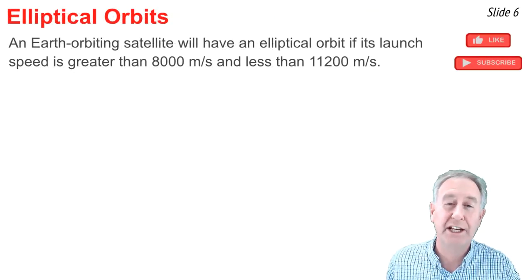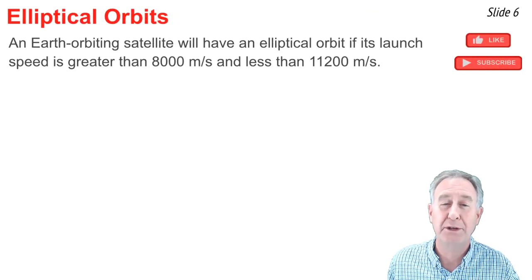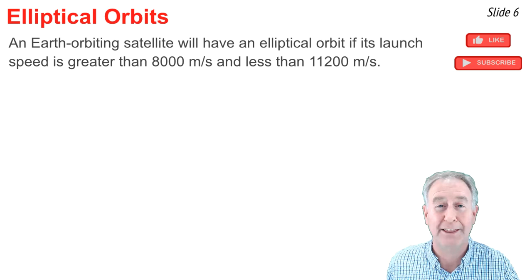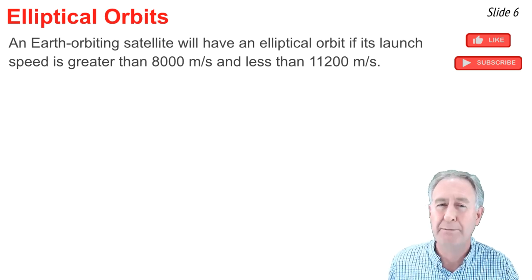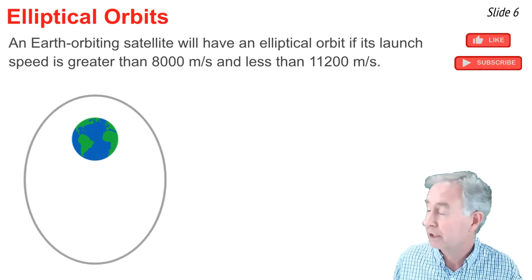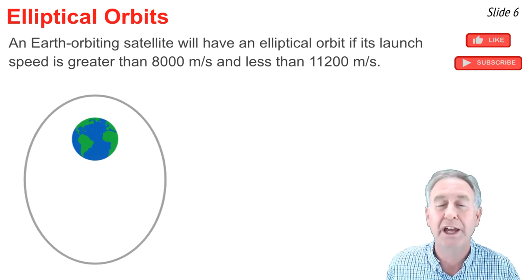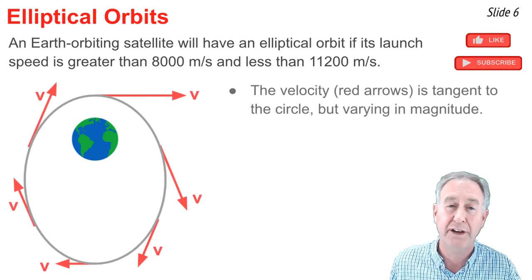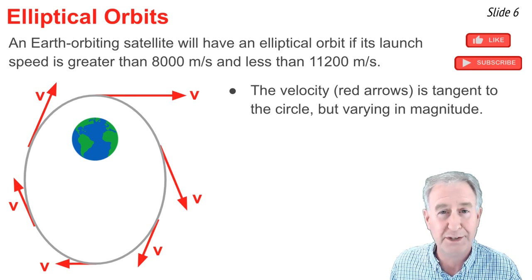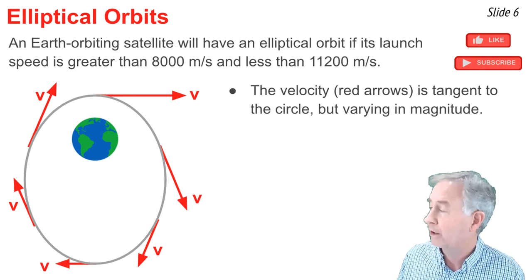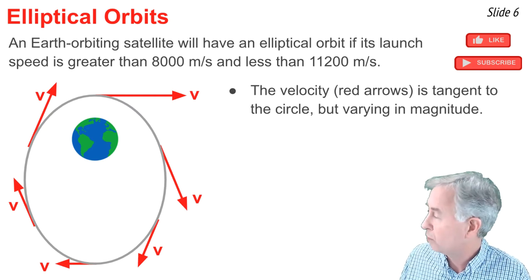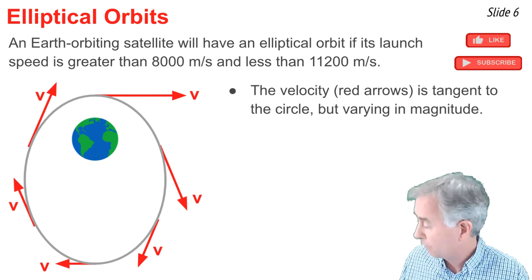When an Earth-orbiting satellite is put into orbit at 8,000 meters per second, it travels around the Earth in a circular orbit. But if launched with a speed greater than 8,000 meters per second and less than about 11.2 kilometers per second, our Earth-orbiting satellite will orbit with an elliptical path as shown. At every location along that path, the direction of the velocity vector is tangent to the path. But the magnitude of the velocity vector is constantly varying. The magnitude is greatest when the satellite is closest to the Earth, and the velocity is smallest when the satellite is furthest from the Earth.